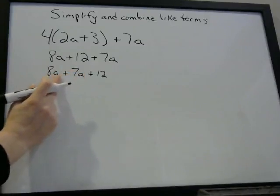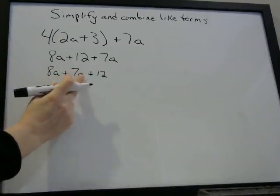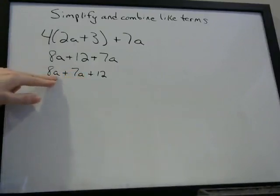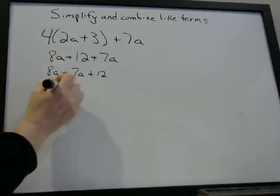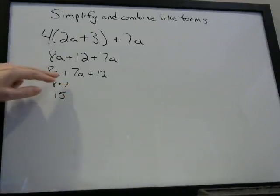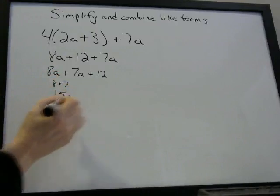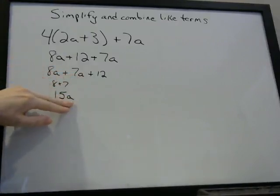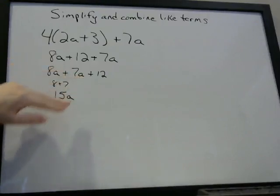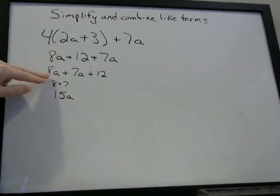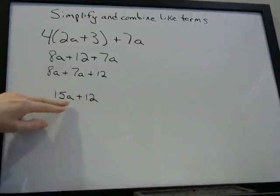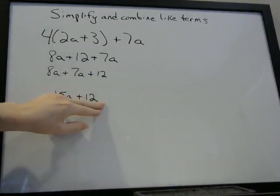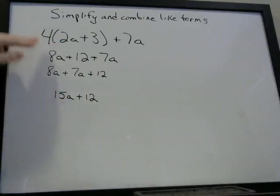So when we now have A's, this is when we're going to combine like terms. Anything with an A beside it we can combine. The way we do that is you just look at the number part of the A — here's an 8 and here's a 7 — and do the math: 8 plus 7 gives us 15A. So 8A plus 7A is 15A. Think of it as 8 apples plus 7 apples gives 15 apples. So we're at 15A plus 12, and that would be the answer. We can't combine further because one term has an A and the other doesn't.